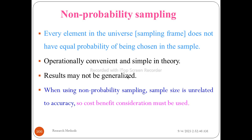The non-probability sampling method is a type of method where the sample size is related to accuracy. When using non-probability sampling, the sample size is unrelated to accuracy. Cost-benefit consideration must be used to determine the main sample size, which may differ from the random side of the sample size.